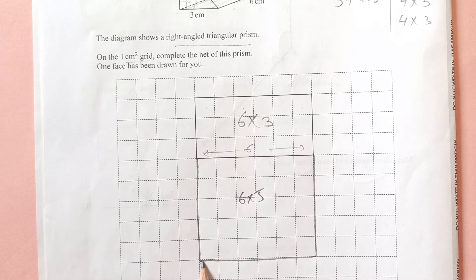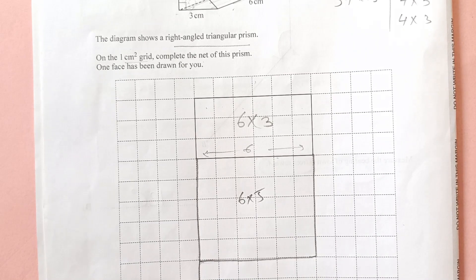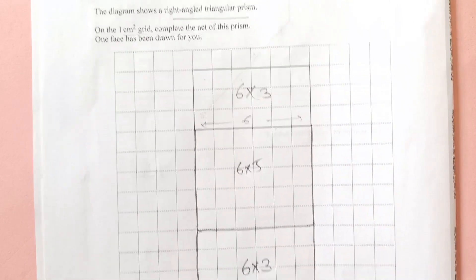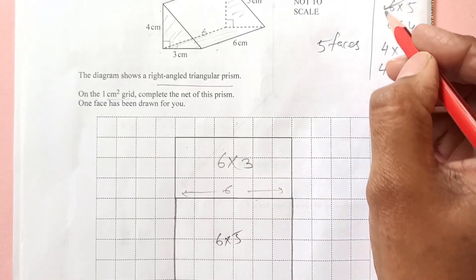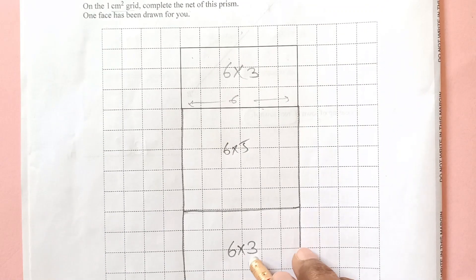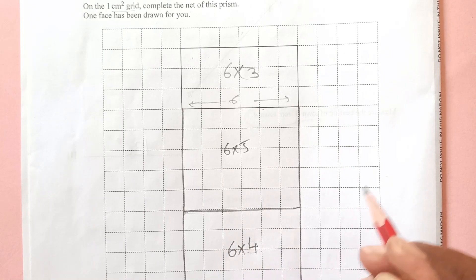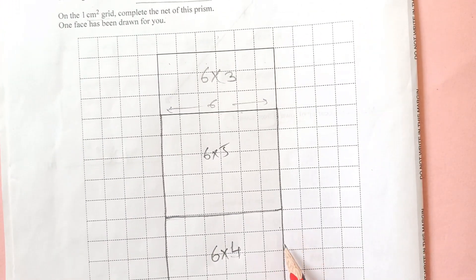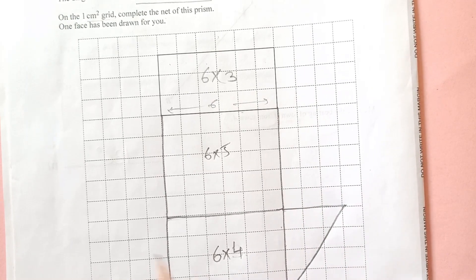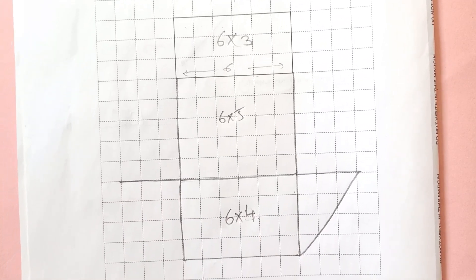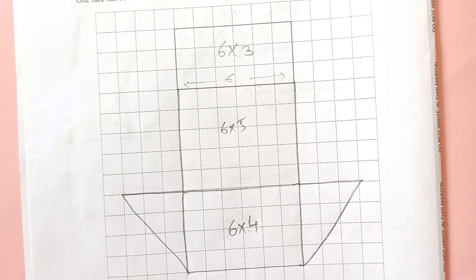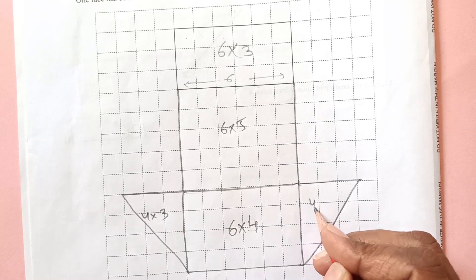Then draw the 6×4 rectangle — 6 units by 4 units. The two triangular faces (4×3 right triangles) can fit in the remaining spaces. Please use a ruler to make your diagram neat. We now have all five faces: 6×3, 6×5, 6×4, and two 4×3 triangles.